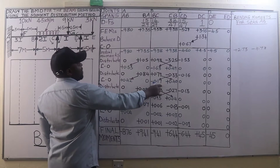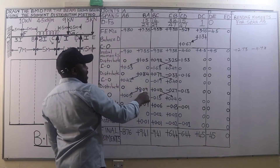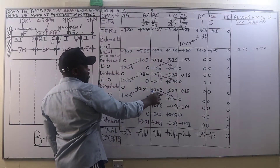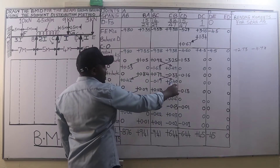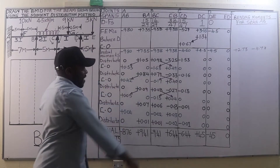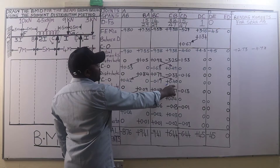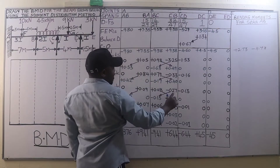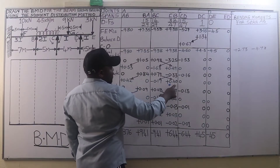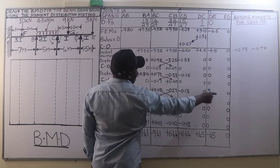Positive 0.17 times 15/29 is positive 0.09; 0.17 times 14/29 is 0.08. At joint C the excess moment is negative 0.40 after changing the sign. Negative 0.40 times 32/47 is negative 0.27; negative 0.40 times 15/47 is negative 0.13. The others are zeros.